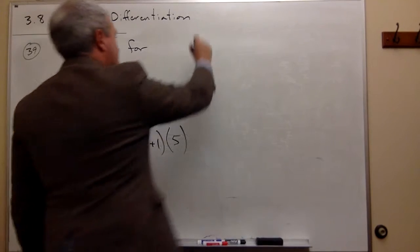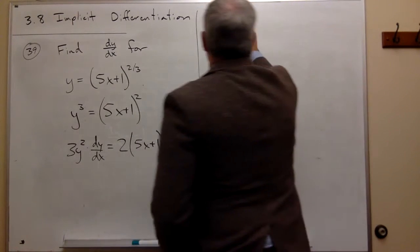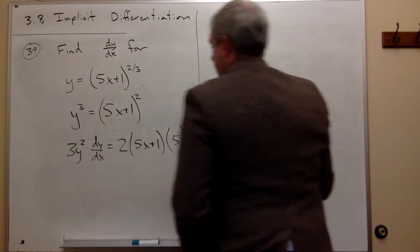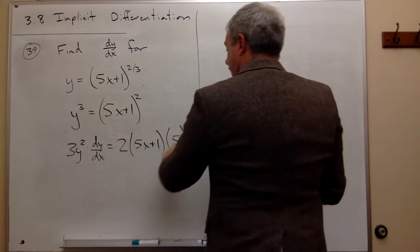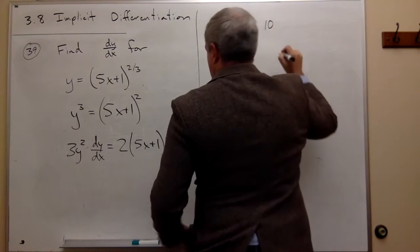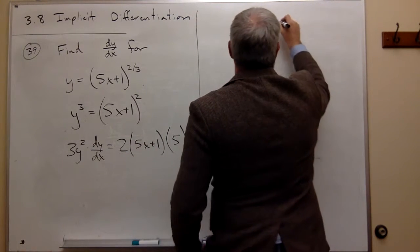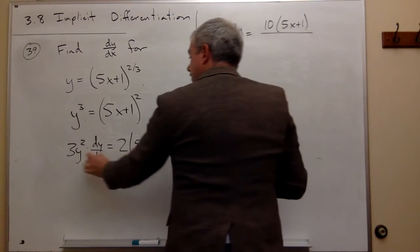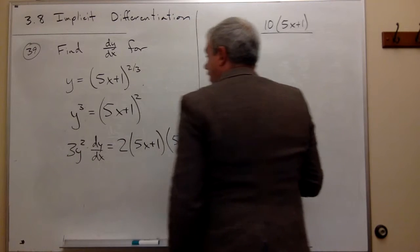Now I can just solve for dy/dx. I get that dy/dx is equal to, let's see, 5 times 2, which is 10, times (5x + 1), divided by 3y².